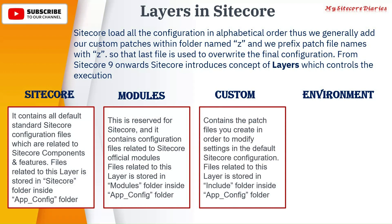Then you have the Custom layer. This contains the patch files you create in order to modify the default Sitecore configuration. Files related to this layer are stored in the include folder inside app_config. In the old version you used to create a Z folder — you no longer need that. You can create your patch files directly in the Custom layer. All custom files go into the include folder.